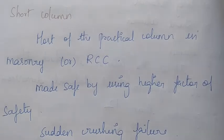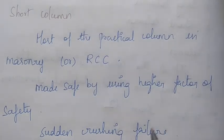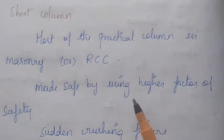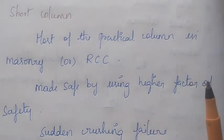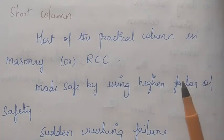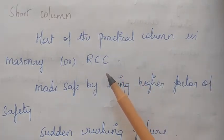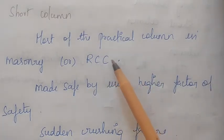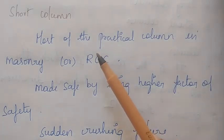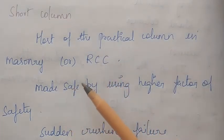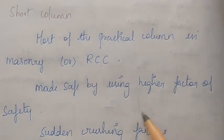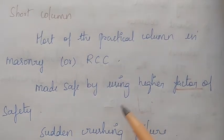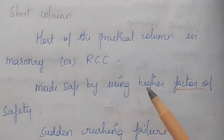Next — short column versus long column: most practical columns in machinery are short columns. For RCC structures, short columns are common. What we are doing now with short columns, we need to add a factor of safety. The sudden crushing failure of a short column is why a higher factor of safety is required in design.